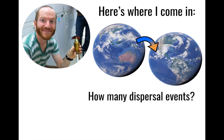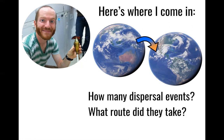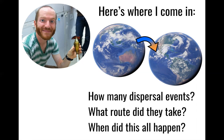First of all, how many dispersal events did it take to build up our songbird communities here in Minnesota — or the Western Hemisphere as a whole? Did this happen once, a handful of times? Not totally sure. What route did they take? Were they island hopping across the ocean? Did they fly straight across, or was there a large land bridge that connected continents and more easily facilitated this movement? And then lastly, when did all of this happen? Was there one specific point in time when all these birds arrived, or has this been a more continuous process throughout geologic time?